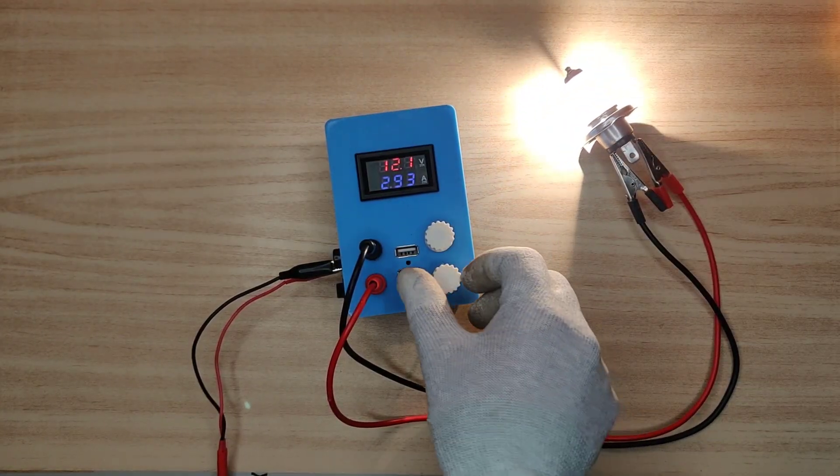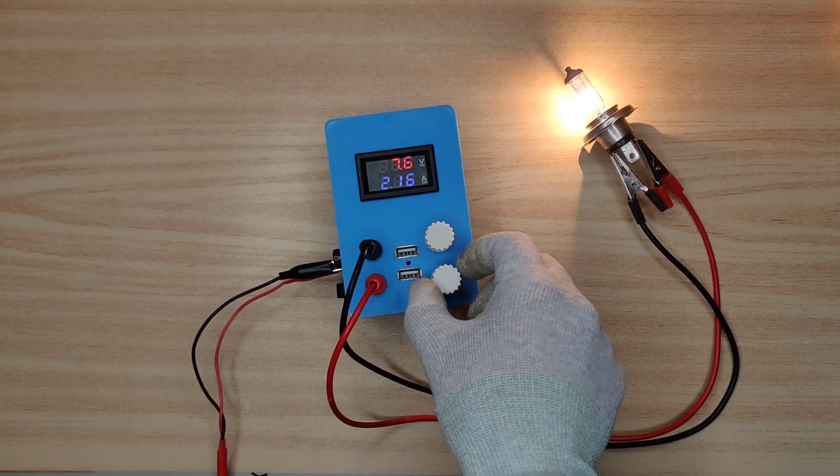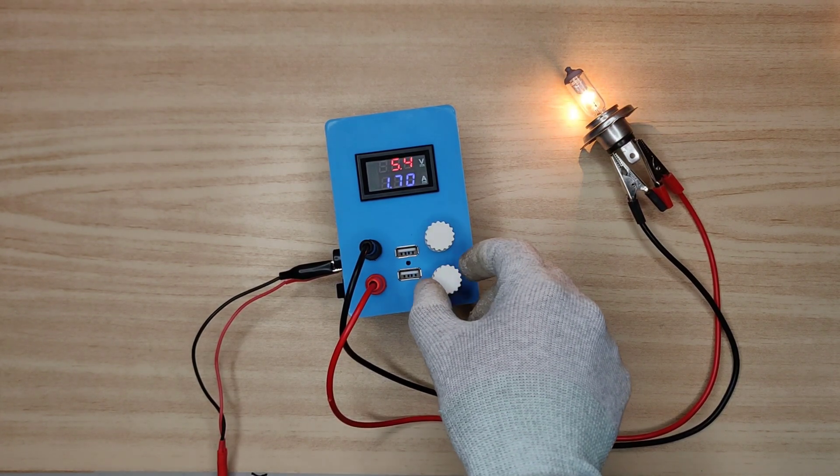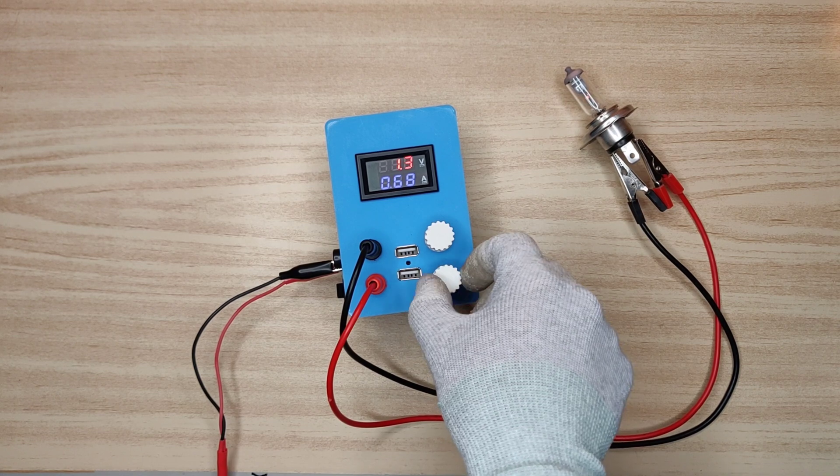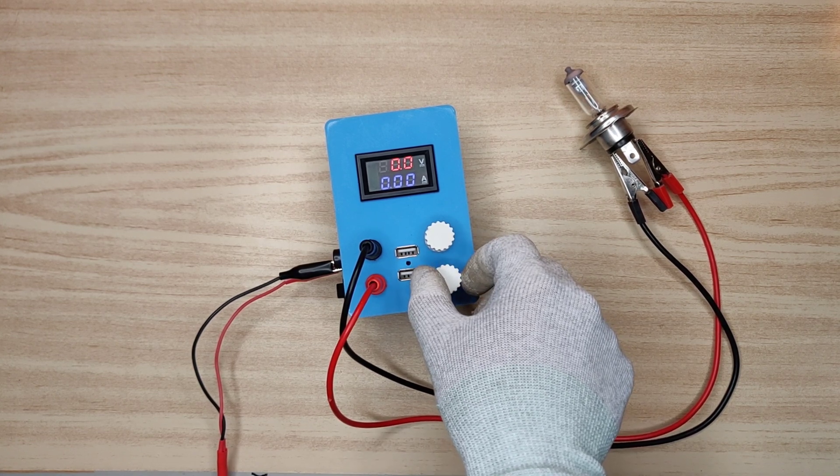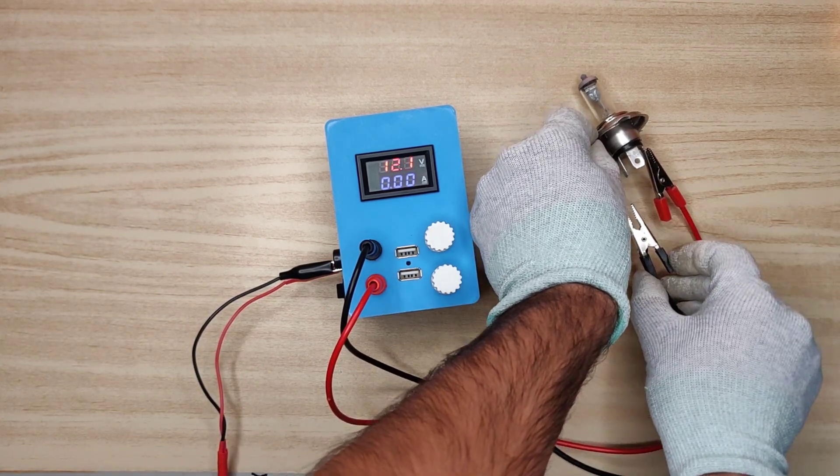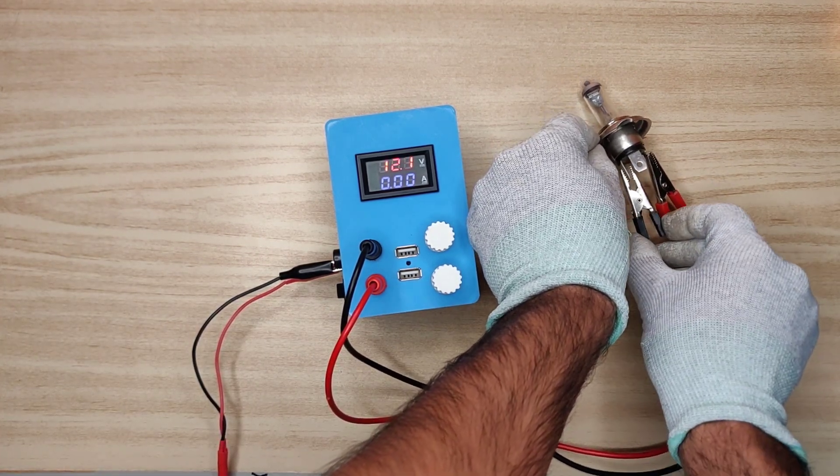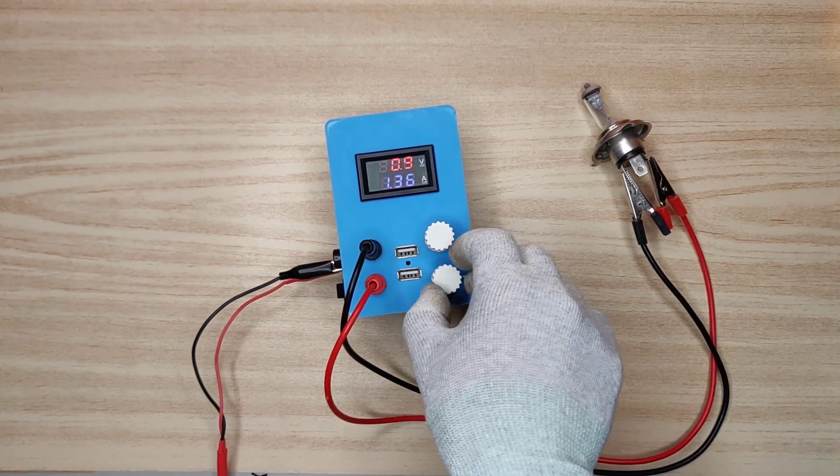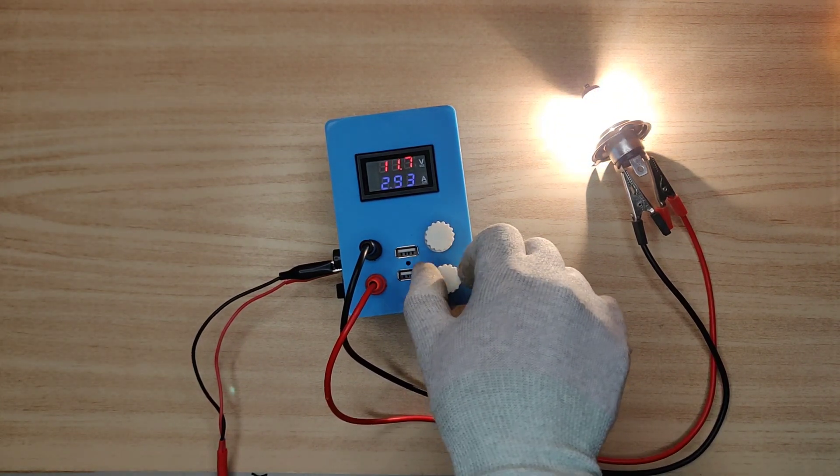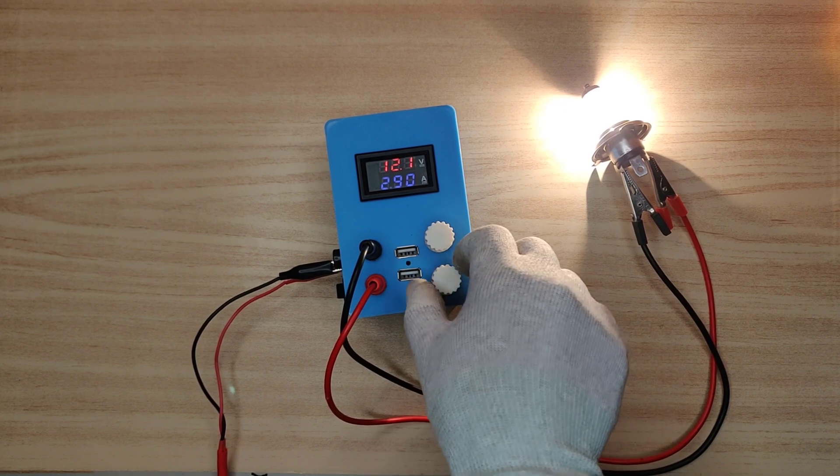With this knob you can adjust the output current. You may notice on decreasing the current, voltage also shows decrease. It is because when there is not enough current, the load will drop voltage. It will get back to set voltage if I disconnect load. And on increasing the current, the voltage will get back to the set value. And max current the load draws is about 2.9 amperes.